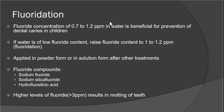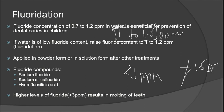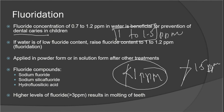Normally, the fluoride concentration in water should be 0.7 to 1.2 ppm. The acceptable range is 1 to 1.5 ppm. Whenever we check the water, it should never go below 1 ppm and never exceed 1.5 ppm. If fluoride is less than 1 ppm, it causes dental caries in children.